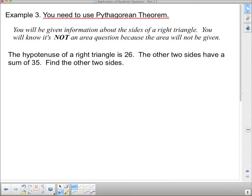Okay, last question. And this is where we need to use the Pythagorean Theorem. So, you will be given information about the sides of a right triangle. And you will know it's not an area question because there is nothing to do with area in the question. So, for this one, it says the hypotenuse of a right triangle is 26. So, here we draw our triangle. The hypotenuse of a right triangle is 26.